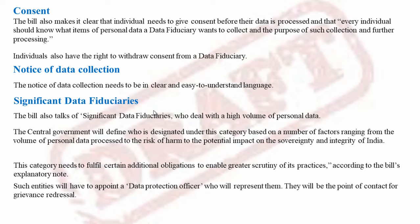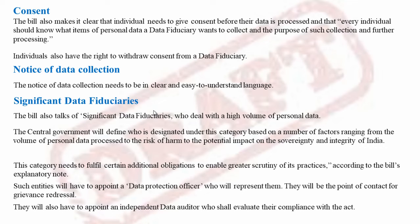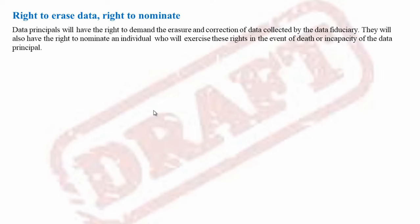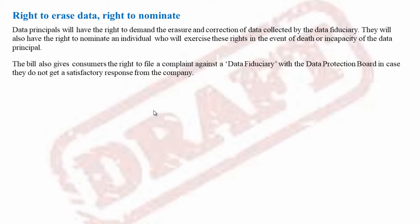Such entities will have to appoint a data protection officer who will represent them, and an independent data auditor who shall evaluate their compliance with the act. The data principal will have the right to demand the erasure and correction of data collected by the data fiduciary. They will also have the right to nominate an individual who will exercise these rights in the event of death or incapacity of the data principal. The bill also gives consumers the right to file a complaint against the data fiduciary with the Data Protection Board if they do not get a satisfactory response from the company.